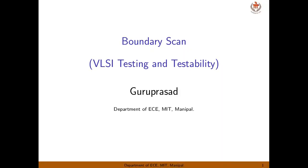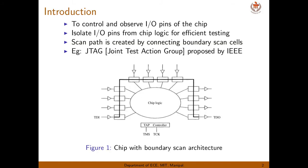Hello, this is a video lecture on VLSI testing and testability and today's topic is boundary scan. What is boundary scan? It is used to control and observe IO pins of the chip. It isolates IO pins from the main chip logic for efficient testing. A scan path is created by connecting all the boundary scan cells. An example of boundary scan architecture is JTAG.